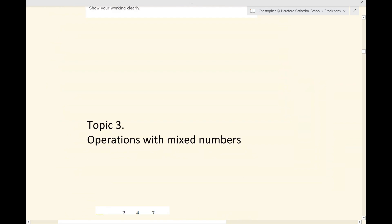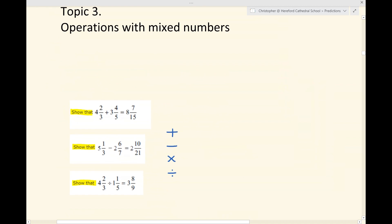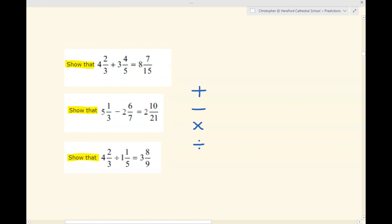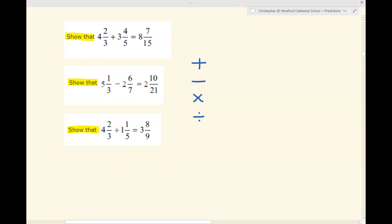Topic three, operations with mixed numbers. These are relatively straightforward. Generally, the question seems to be a show that a calculation has a particular solution. What you have to do in these cases is to ignore the solution they give you, work through the question, work through the left-hand side, show your working clearly, and hope that you get the answer on the right-hand side.